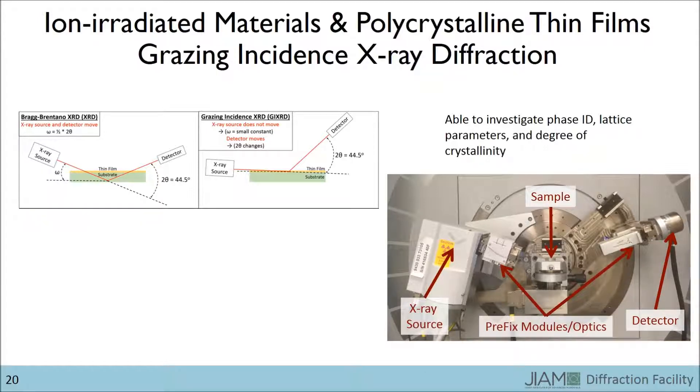All of the other stuff in the X-ray path is used to condition the beam. We can use different configurations to control the size of the X-ray footprint on the sample, how spread out the beam is, and so on.